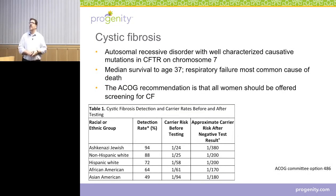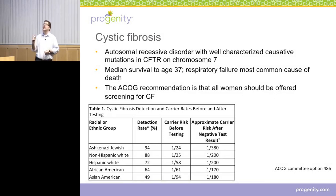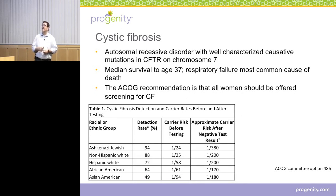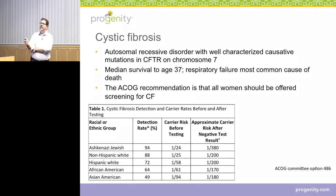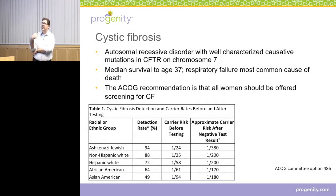As an example, one of the canonical cases for carrier screening is cystic fibrosis. This is a fairly high prevalence, autosomal recessive disorder with very well-characterized causative mutations. If you have cystic fibrosis, your median survival is about 37, and respiratory failure is the most common cause of death. The ACOG — the American College of Obstetrics and Gynecology — recommendation is that all women should be offered screening for cystic fibrosis. From their committee opinion, there's a fairly significant carrier risk before testing, detection rate differs across populations, and there's still a residual risk after carrier screening because not all mutations are known and no test is perfect. But this is a nice example of why you would do carrier screening — you can reduce the incidence of cystic fibrosis just by giving people information about their carrier status.